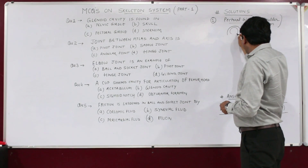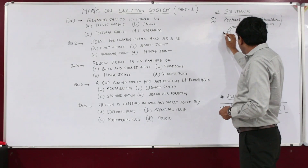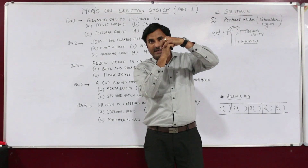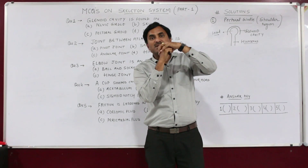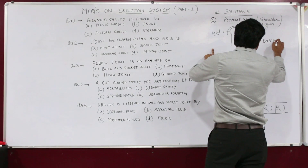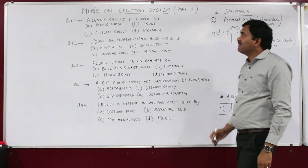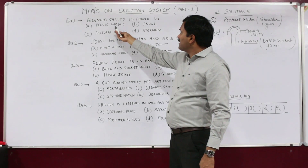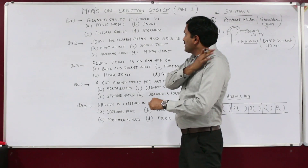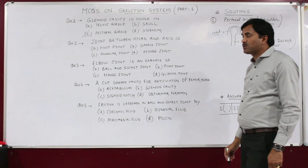The head of the humerus fixes into the glenoid cavity, allowing the humerus to rotate, forming a joint called the ball and socket joint. The options given are pelvic girdle, skull, and pectoral girdle. The pelvic girdle is the hip girdle and is not the answer. The correct answer is C — the pectoral girdle.